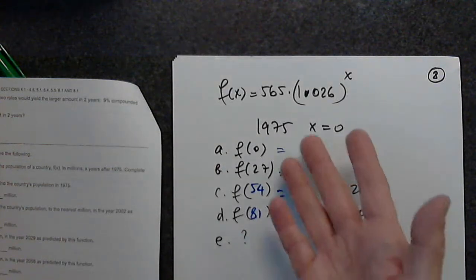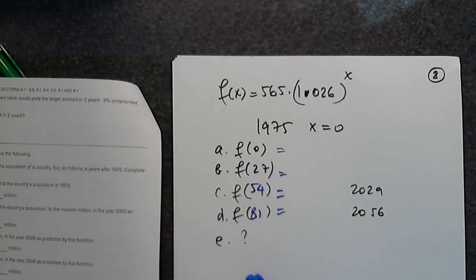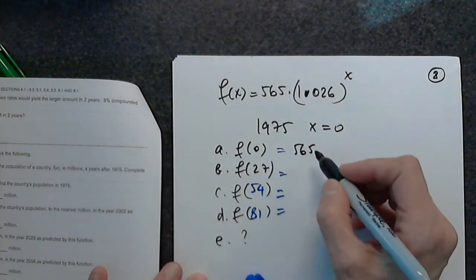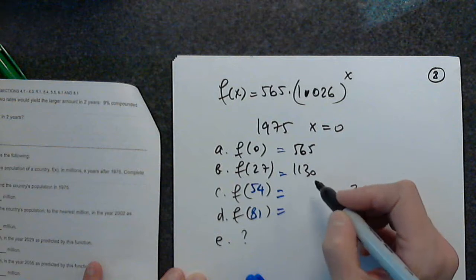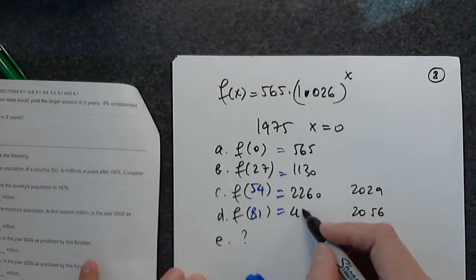Again, we are going to, this time, because we are going to have to find four different values of this function, let's put the function in Y equals and get all of those. In Y equals, clear whatever we had before: 565, open a parenthesis, 1.026, close the parenthesis, and the power I personally put in parenthesis at all times. Then go to second and table, and we want to plug in 0, then 27, then 54, and then 81. And the numbers are 565 million, 1130, 2260, and 4518 million.